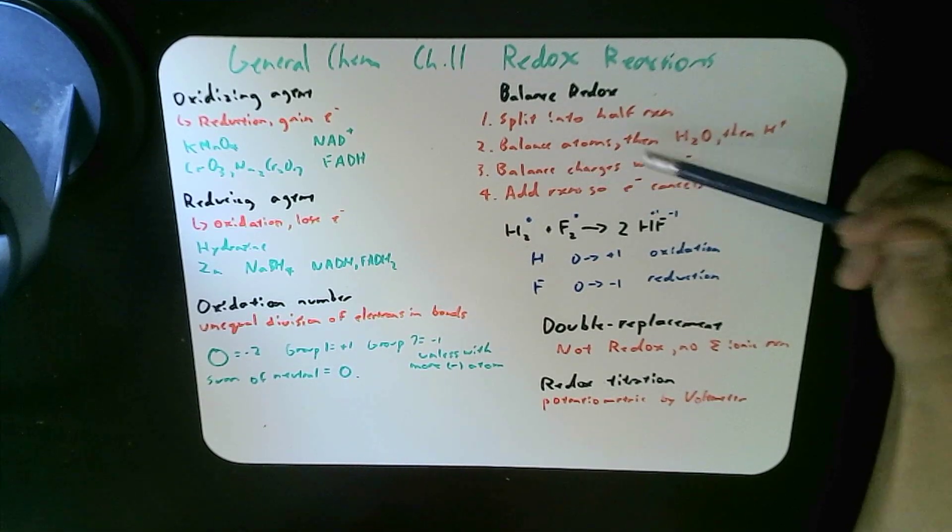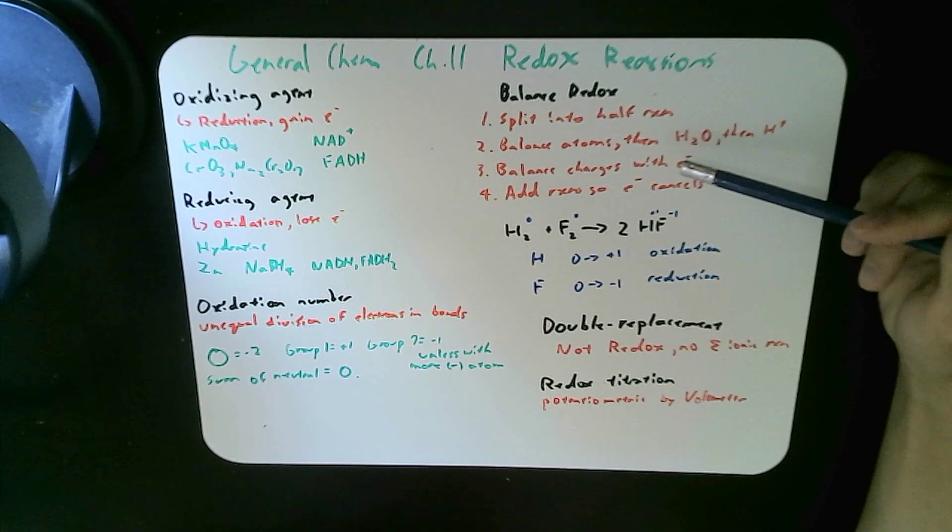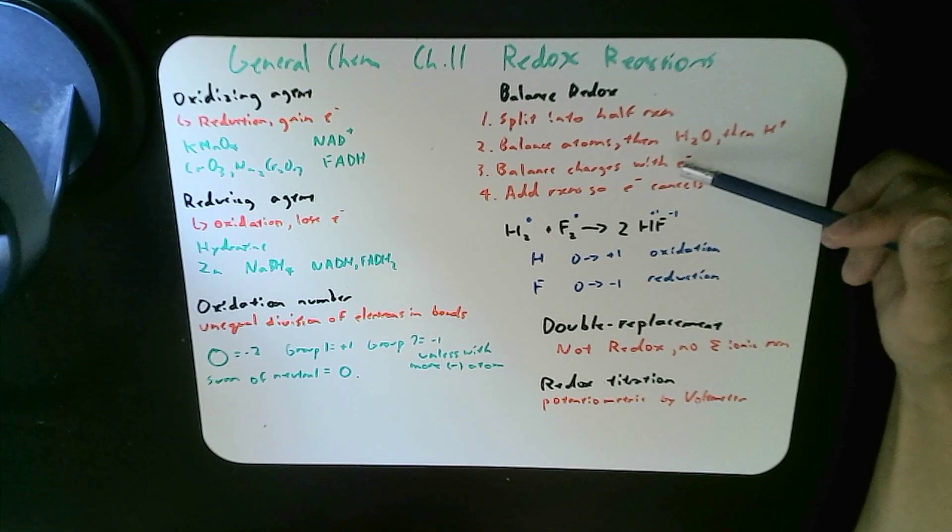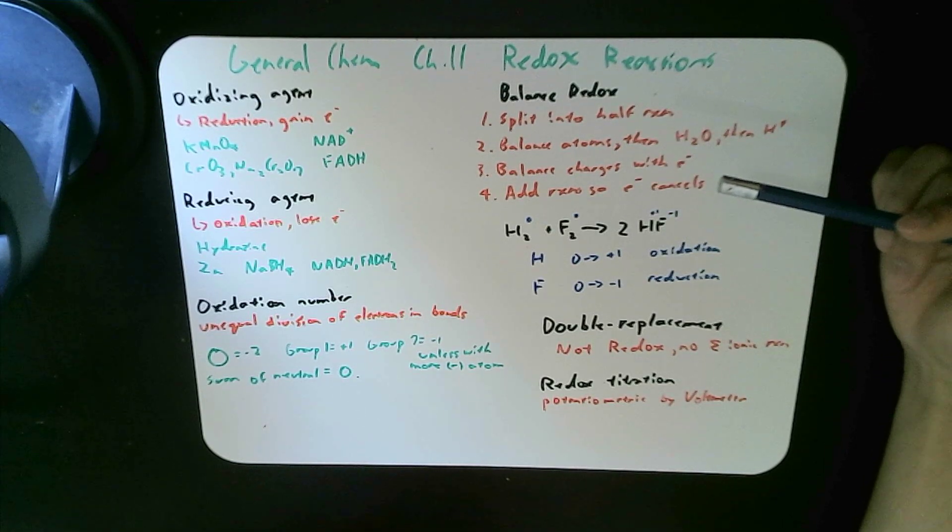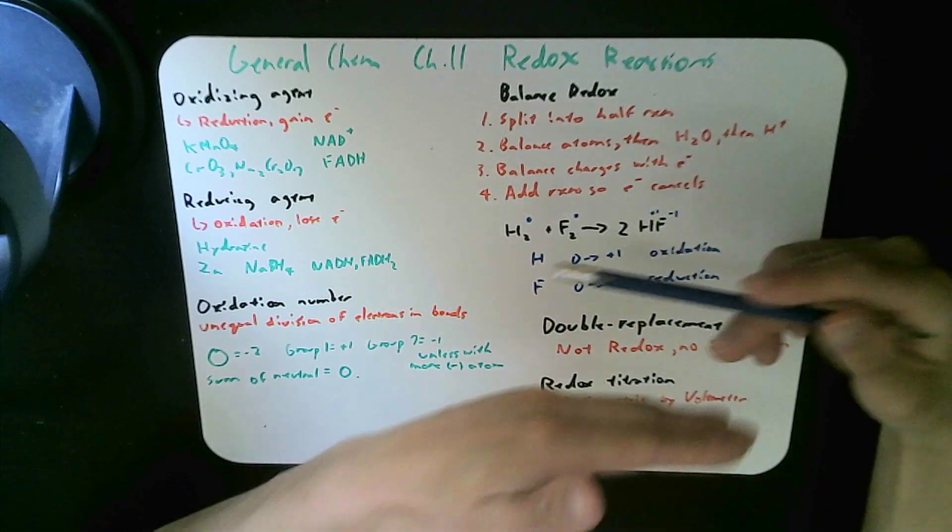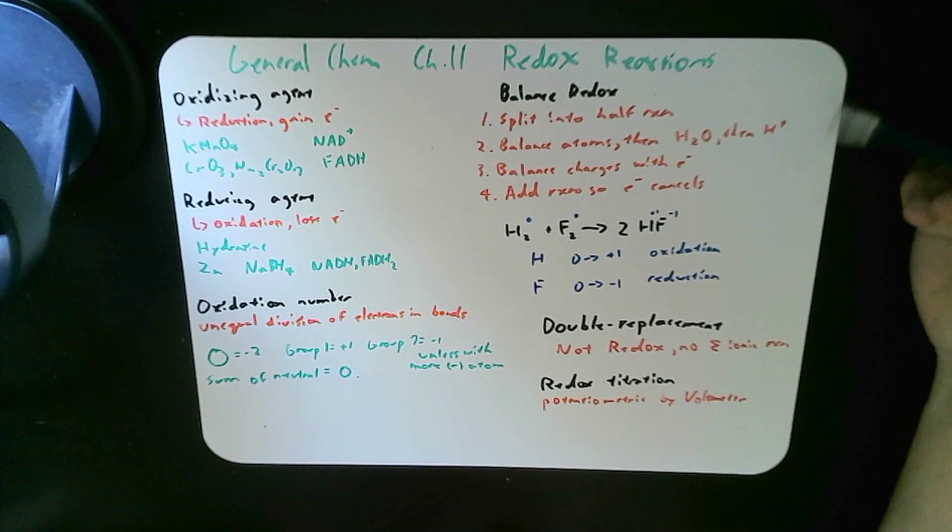Then you can finally balance both sides with the electrons to match them, and then you add the reactions together, two half reactions, so that the negatives cancel out.